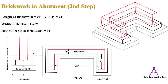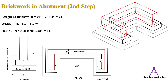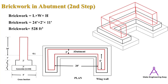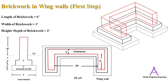For the brickwork in the abutment in the second step, the length is calculated as 20 + 2 + 2 = 24 feet. The width of the brickwork is two feet and the height or depth is 11 feet. Multiplying length × width × height gives 528 cubic feet of brickwork in the second step of the abutment.